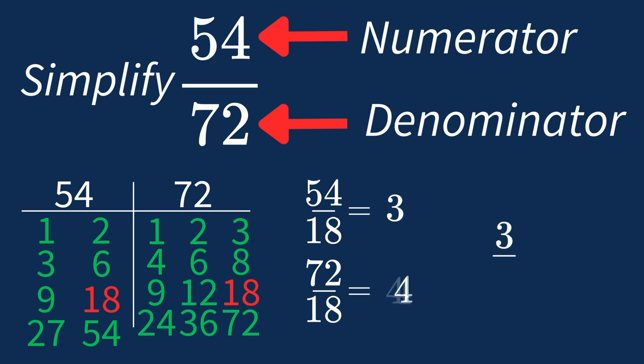the simplified fraction is 3 over 4. And we know that 3 over 4 is in its simplest form, because the only common factor between 3 and 4 is 1. And when 1 is the largest common factor, we know that our fraction has been simplified.